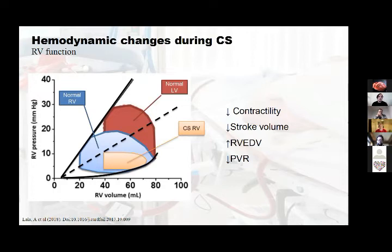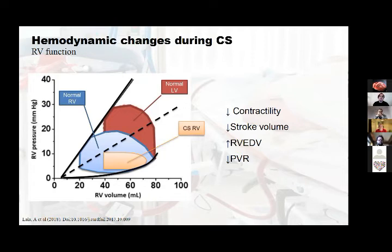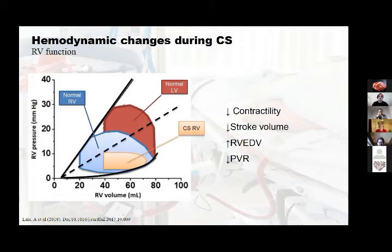Do not forget the right ventricle during cardiogenic shock — right ventricular function is also impaired. Here we can see in blue the pressure-volume loop of the right ventricular function, and in orange how it looks during cardiogenic shock. There is a decrease in contractility, a decrease in stroke volume, an increase in right ventricular end-diastolic volume, and a decrease in pulmonary vascular resistance.